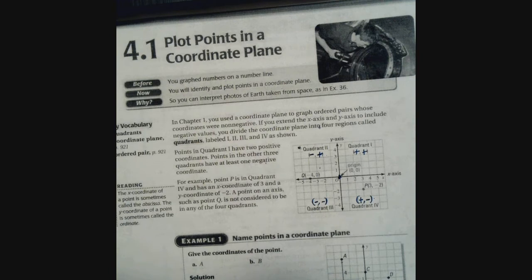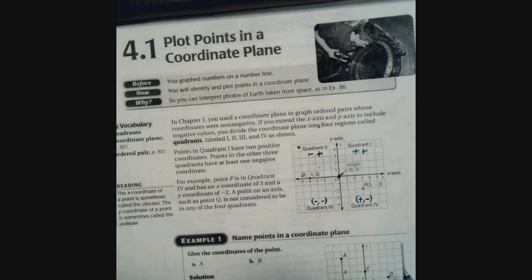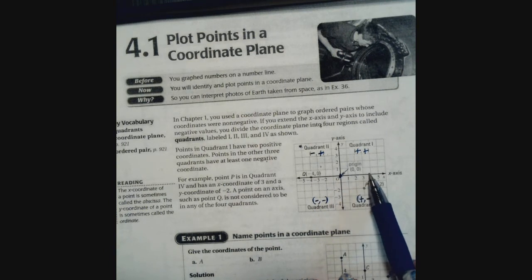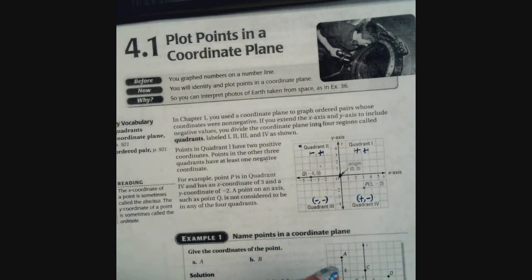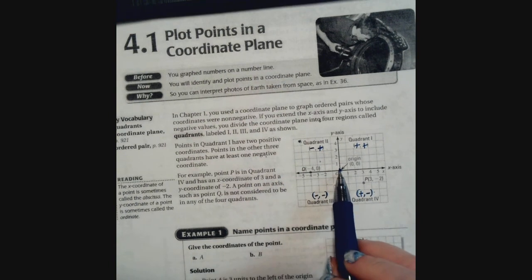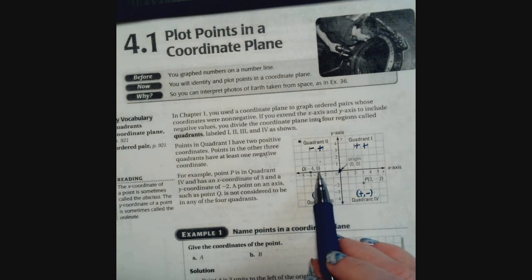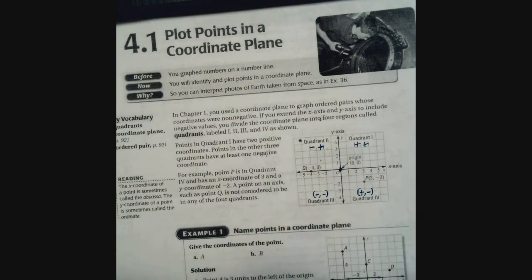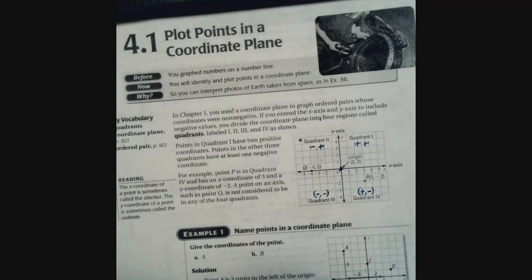The coordinate plane has four quadrants. In quadrant one, x is positive and y is positive — you always do x first, then y. In quadrant two, the x values are negative (negative two, negative three) and the y values are positive (one, two, three). You can tell which quadrant you're in by looking at the signs on the x and y axes.